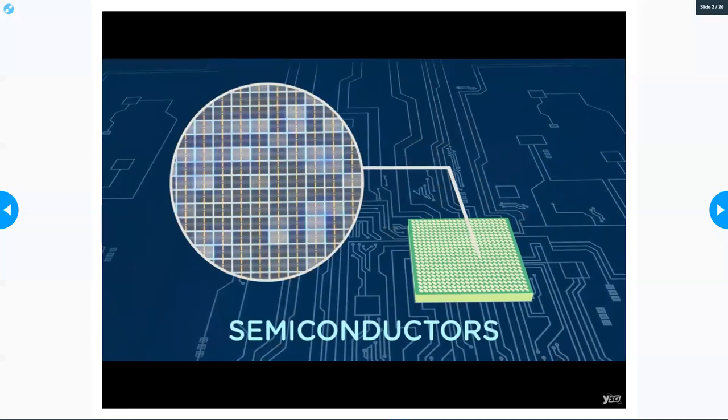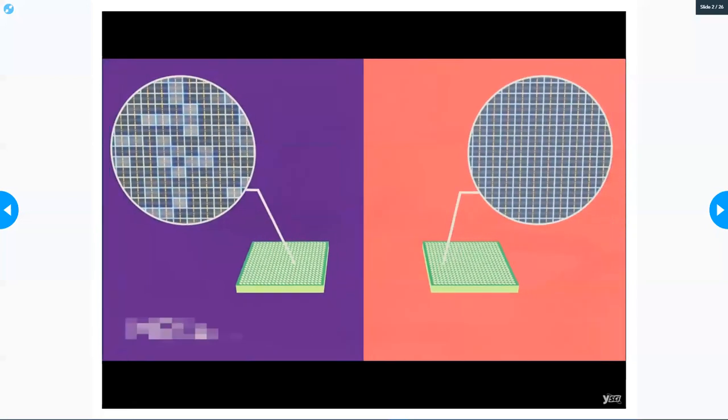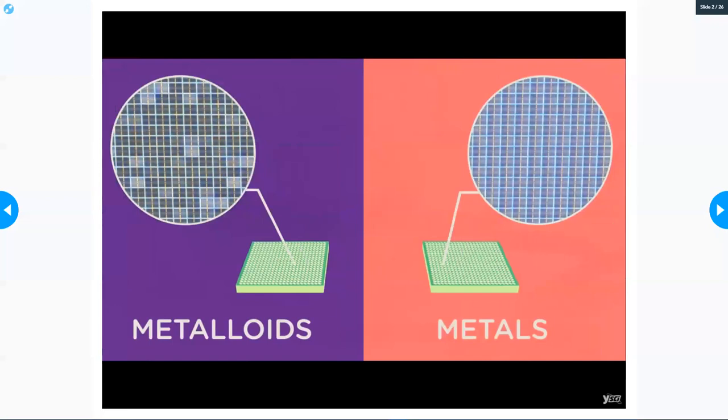Semiconductors allow electricity to pass through your phone's transistors in a controlled manner. If you used metal, too many of your transistors would activate, causing your processor to malfunction.